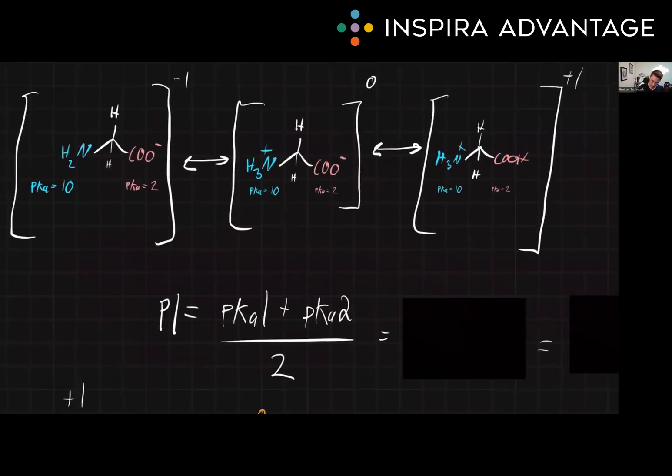If we do the math here, we say, okay, our pI, our isoelectric point, is equal to the pKa1 base and the pKa2, our acid, divided by 2.